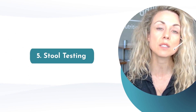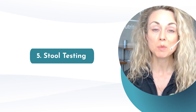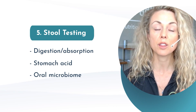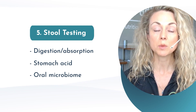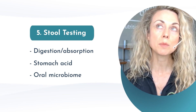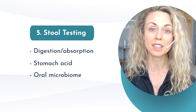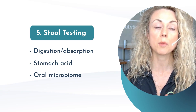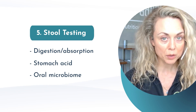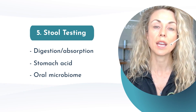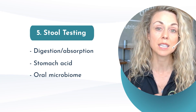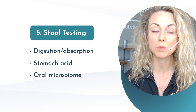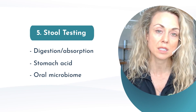Next is stool testing, which is important for several reasons. Digestion and absorption are critical: we can assess how patients are digesting fats, proteins, and carbohydrates via pancreatic elastase, as well as their ability to break down proteins. We need enough stomach acid to break down protein so we're actually obtaining enough L-arginine for nitric oxide production. We also want to think about the microbiome's influence on the oral microbiome — dysbiosis in the gut has a direct impact on the anaerobic bacteria in the mouth, which is key for optimizing the enterosalivary pathway. Stool testing is an important lens for understanding how digestion, absorption, and dysbiosis can affect nitric oxide.